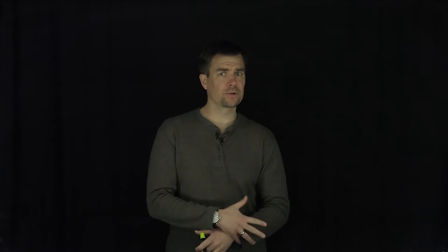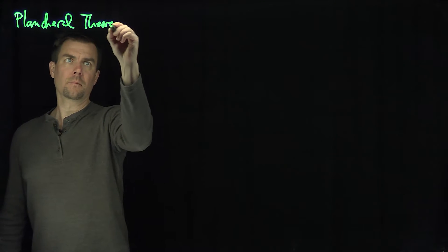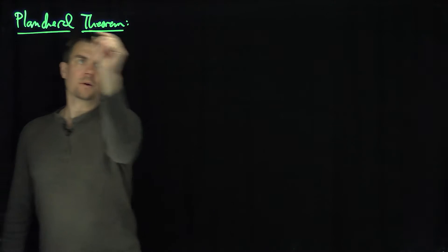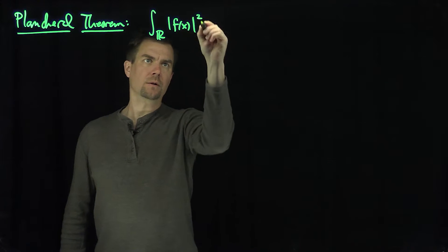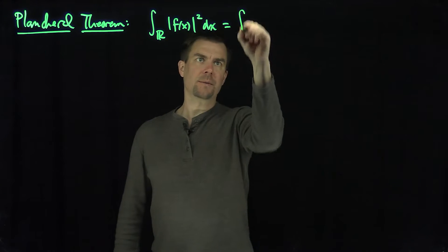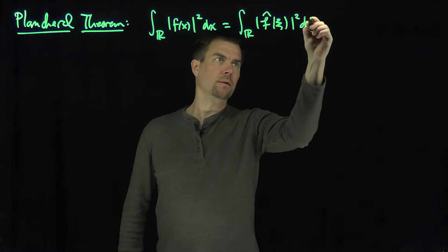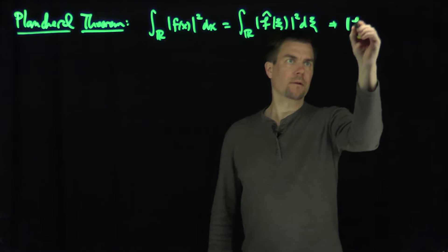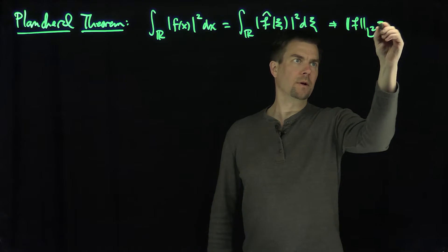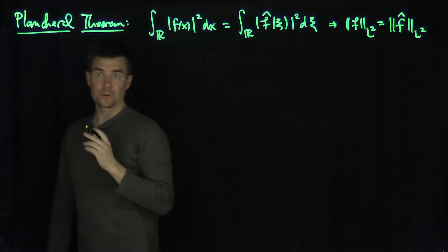Hello students. In this video we'll prove the Plancherel theorem. The Plancherel theorem states that the L2 norm of a function, squared, is the same as the L2 norm of its Fourier transform, squared. In other words, in shorthand: ‖f‖_L2 = ‖f̂‖_L2. So the Fourier transform is an L2 isometry.